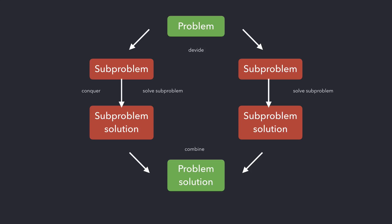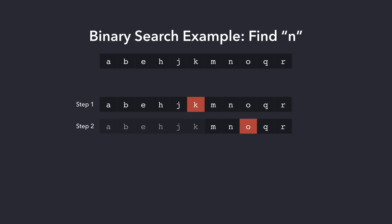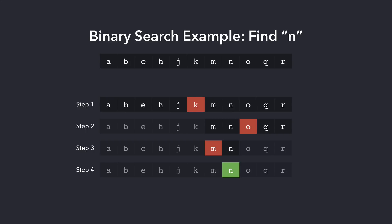A divide and conquer algorithm works by recursively breaking down a problem into two or more subproblems of the same or related type, until they become simple enough to be solved directly, and the solutions are combined to give the solution to the original problem. Now let's apply this to our binary search example. Say we have an array of letters and want to find the letter N. In the first step, we inspect the element in the middle of the array and check if it is greater than, less than, or equal to the value we're searching for. If equal, we're done. If the middle value is less than our search value, we narrow down to the last half of the array. If greater, we narrow down to the first half. We repeat until we find the value or the array cannot be split further.